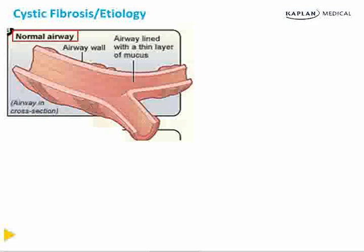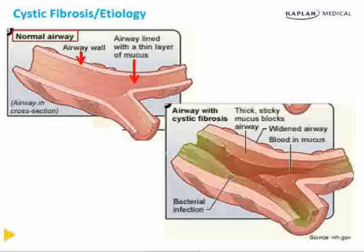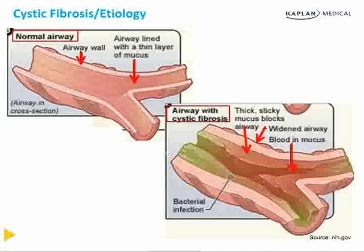This is a picture of a normal airway — the airway wall is thin, the diameter is normal, and the thin layer of mucus lining the airway is easy to expel. In a patient with CF, there is thick sticky mucus basically obstructing the airway. Because of repeated infections, the airway widens and remodels and bronchiectasis occurs. There is sometimes blood as a result of destruction of the bronchial arteries, and bacterial infection forms because the patient is unable to clear secretions effectively.